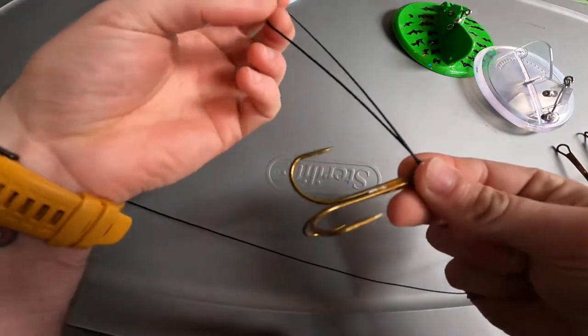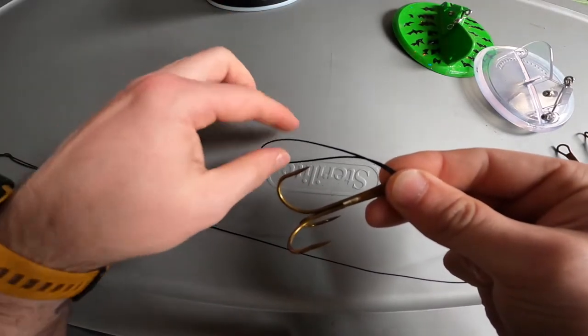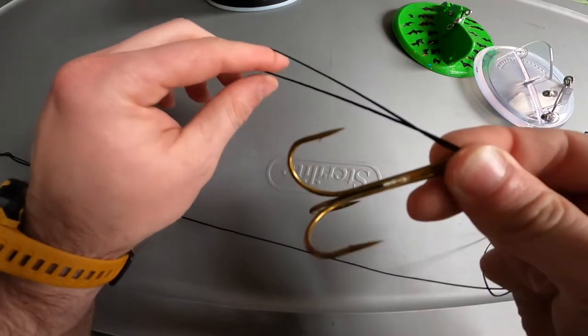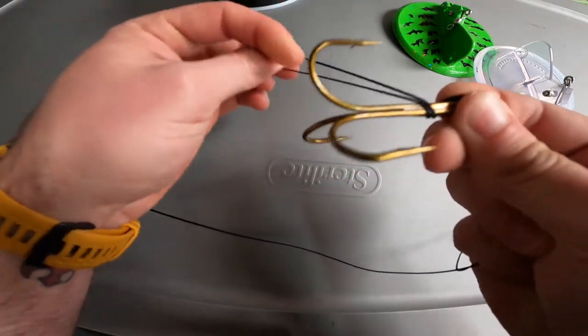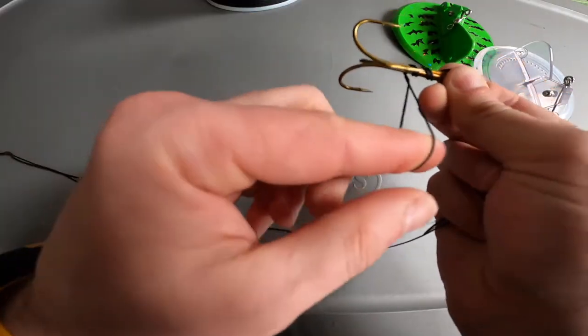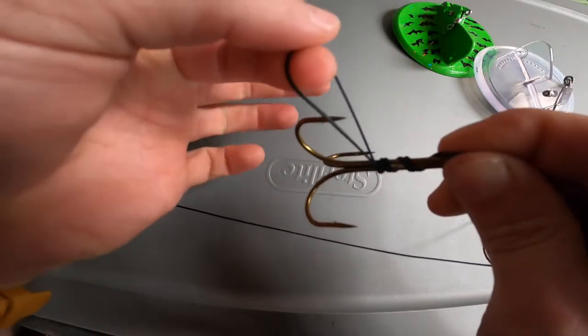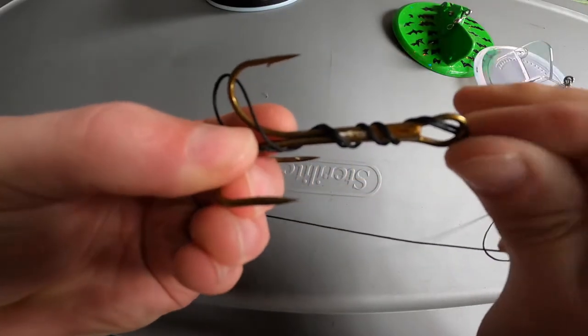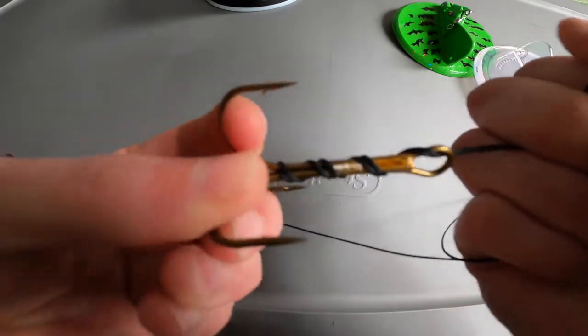Pull out a few inches of line. Then, holding the hook in your right hand, take that loop and wrap it around your hook shank three or four times. Then take that loop and go over one of the barbs, and then pull on this end right here and it will cinch up nice and tight.